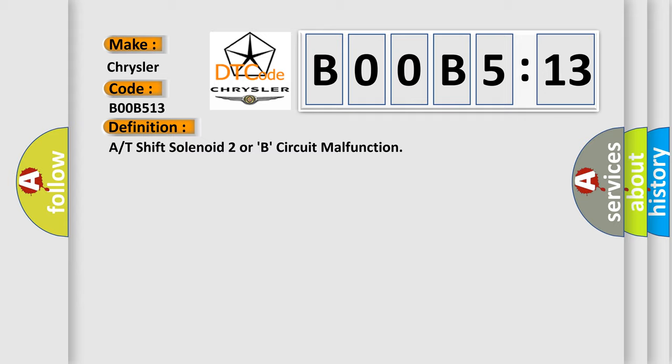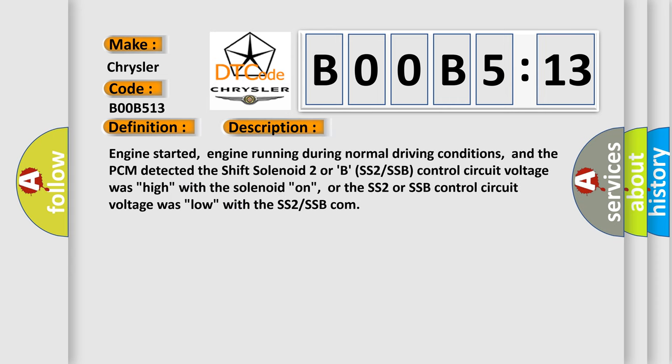And now this is a short description of this DTC code. Engine started, engine running during normal driving conditions, and the PCM detected the shift solenoid 2 or B (SS2/SSB) control circuit voltage was high with the solenoid on, or the SS2 or SSB control circuit voltage was low with the SS2/SSB commanded.